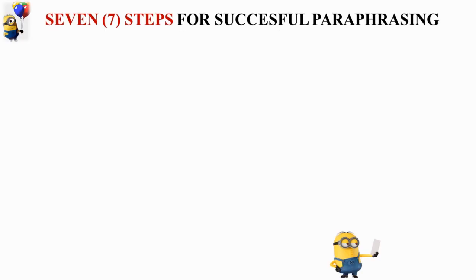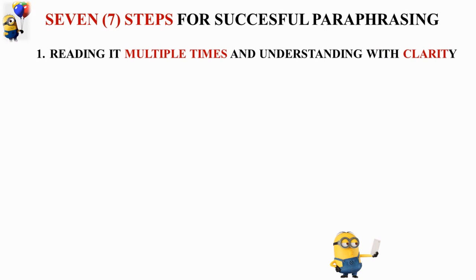Now let's go to the seven easy steps for successful paraphrasing. Step one: read the text multiple times and understand it with clarity. Reading a particular text multiple times will give you the gist of the matter — in what sense the author has written, in what context the argument is being made. If you don't do that, the clarity factor will be missing. Gain clarity through multiple readings so that you absorb more and more of it.